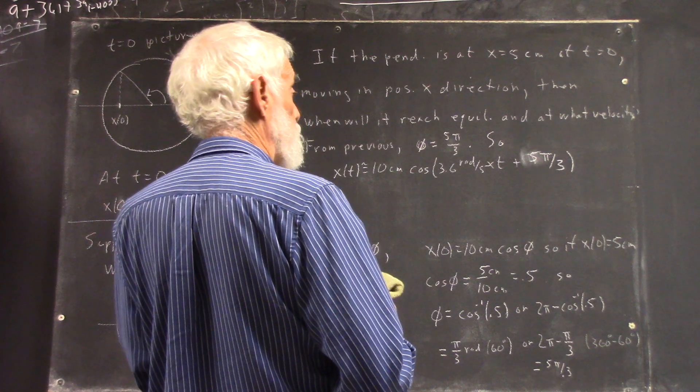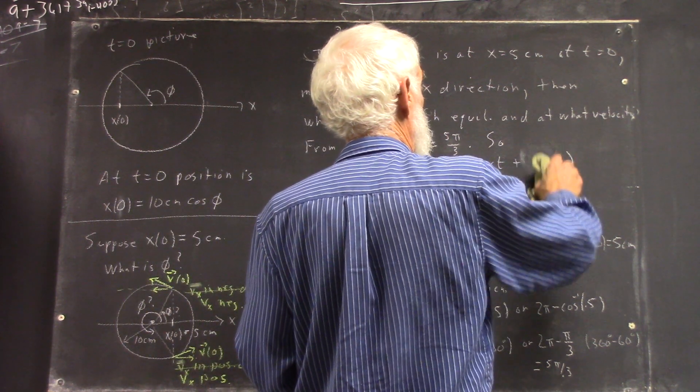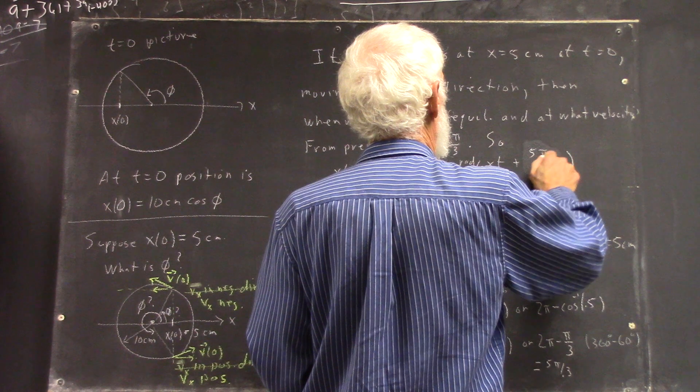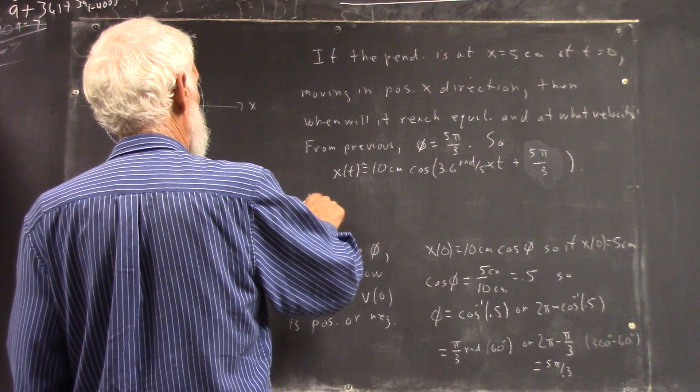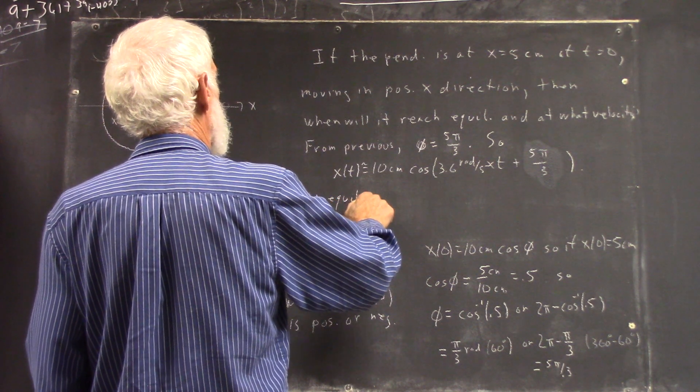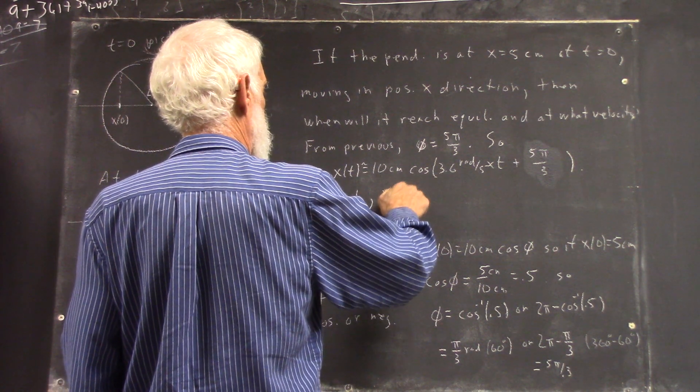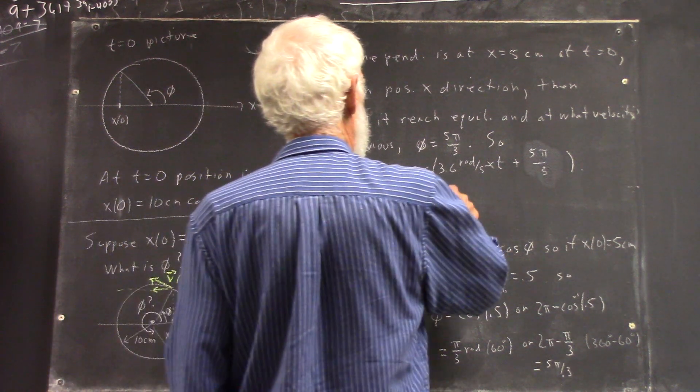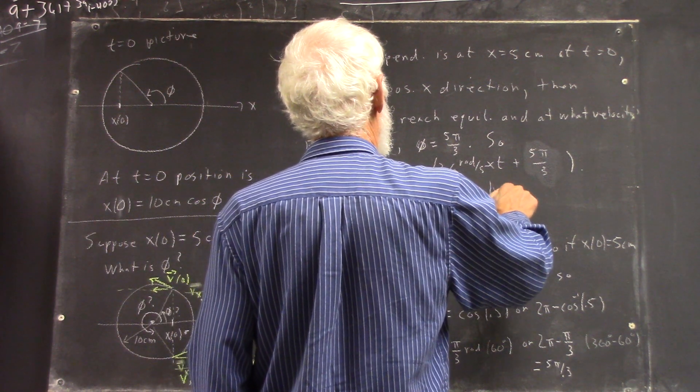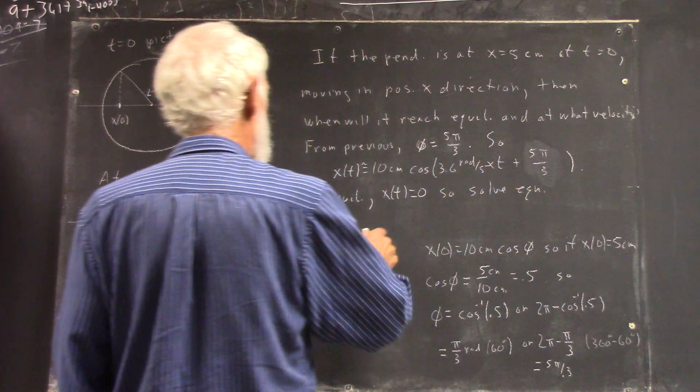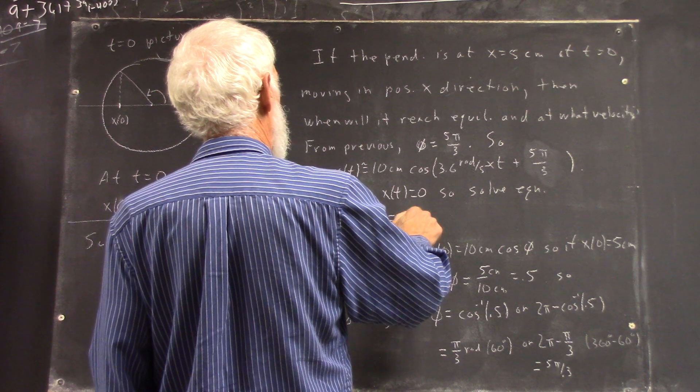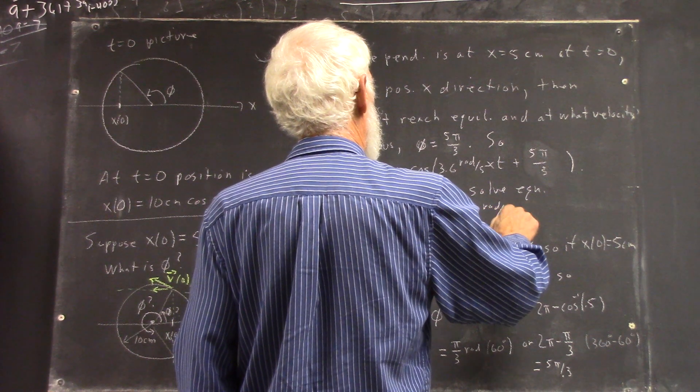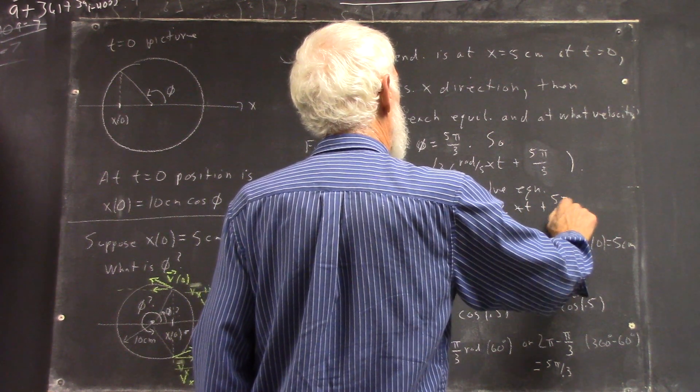Now, we want to know when does it reach equilibrium? So we want to solve the equation: zero equals ten centimeters times the cosine of 3.6 radians per second times t plus five pi over three.